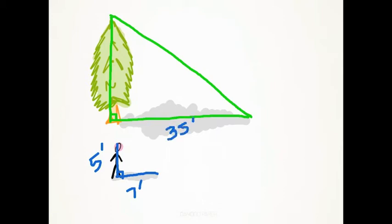Now all we have to do is create a proportion. Five feet over seven feet, that is the height of our friend, equals the height of the tree, which we don't know, over the length of the shadow.